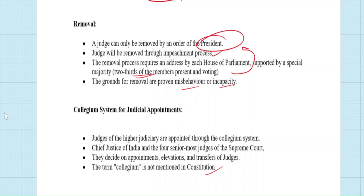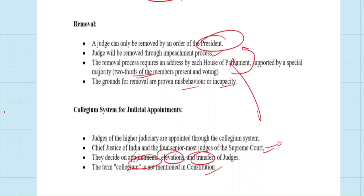The collegium system is not mentioned in the Constitution — this is important to remember. The collegium decides appointments, promotions, and transfers of judges. Currently, the Chief Justice of India along with the four senior-most judges of the Supreme Court form the collegium. Their collective decisions on appointments are sent to the President, who is expected to select from the recommendations. However, the President has been rejecting most names, which is why the judiciary is unhappy.